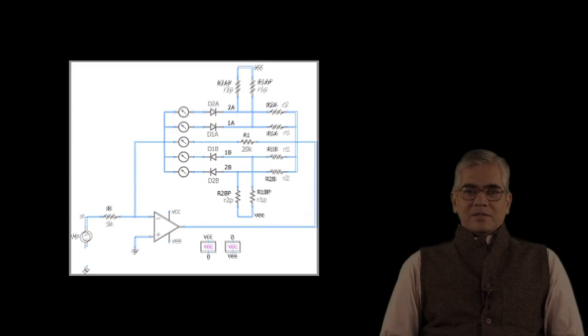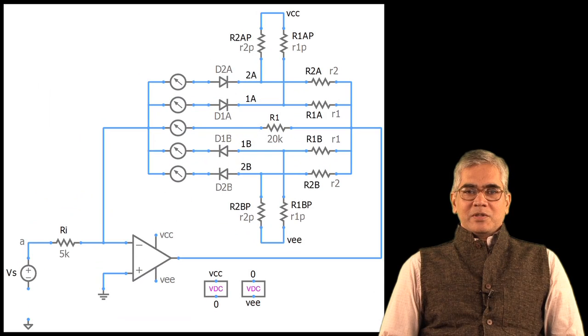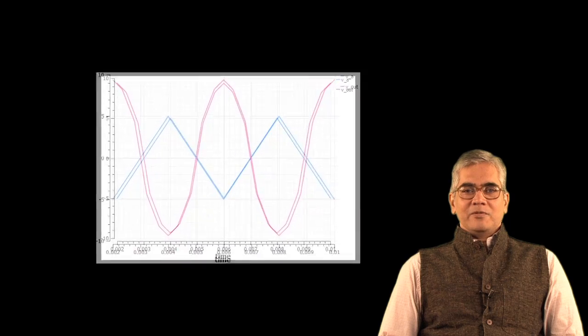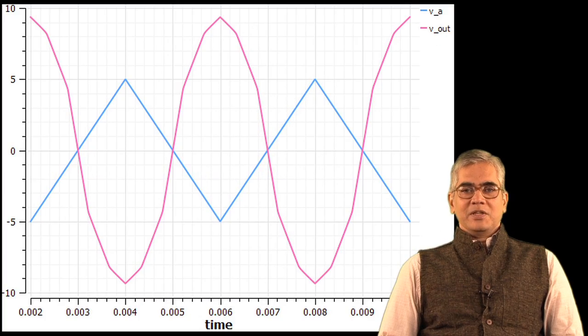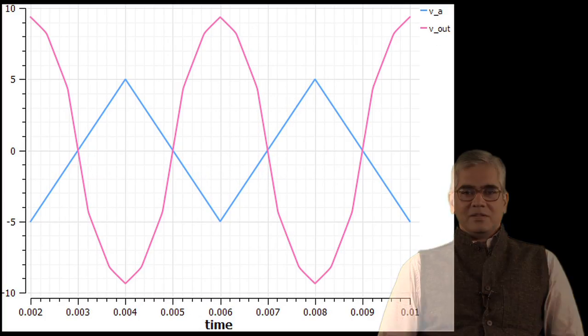To start with, we will have a short revision of basic circuit concepts including network theorems, transient analysis, RC circuits, RL circuits, etcetera. We will then discuss diode circuits such as clipper and clamper, half wave and full wave rectifiers, peak detector, etcetera.